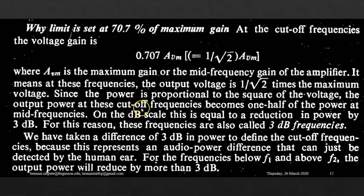the output power at these cutoff frequencies becomes one-half of the power at mid-frequencies. On the dB scale, this is equal to a reduction in power by 3 dB. For this reason, these frequencies are also called 3 dB frequencies.